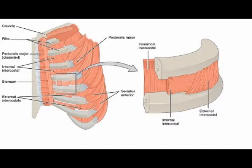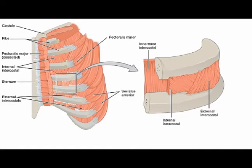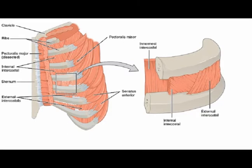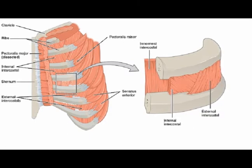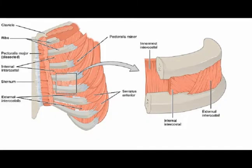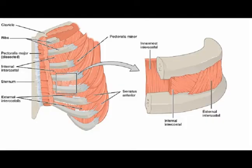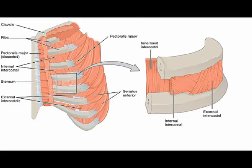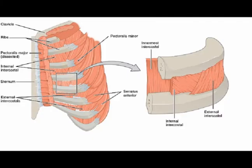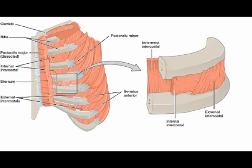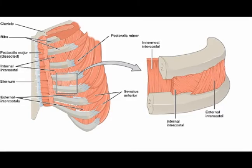The external intercostals' origin is ribs number 1 through 11, and their insertion is ribs number 2 through 12. Their action is ribcage expansion through elevation and separation of the ribs. The internal intercostal muscles aid in forced expiration. Their origin is ribs number 2 through 12 and the insertion is ribs number 1 through 11. Their concentric action is to decrease the transverse dimensions of the ribcage through rib depression and inward bending. The intermost intercostal muscles are the deepest layer of the internal intercostal muscles.